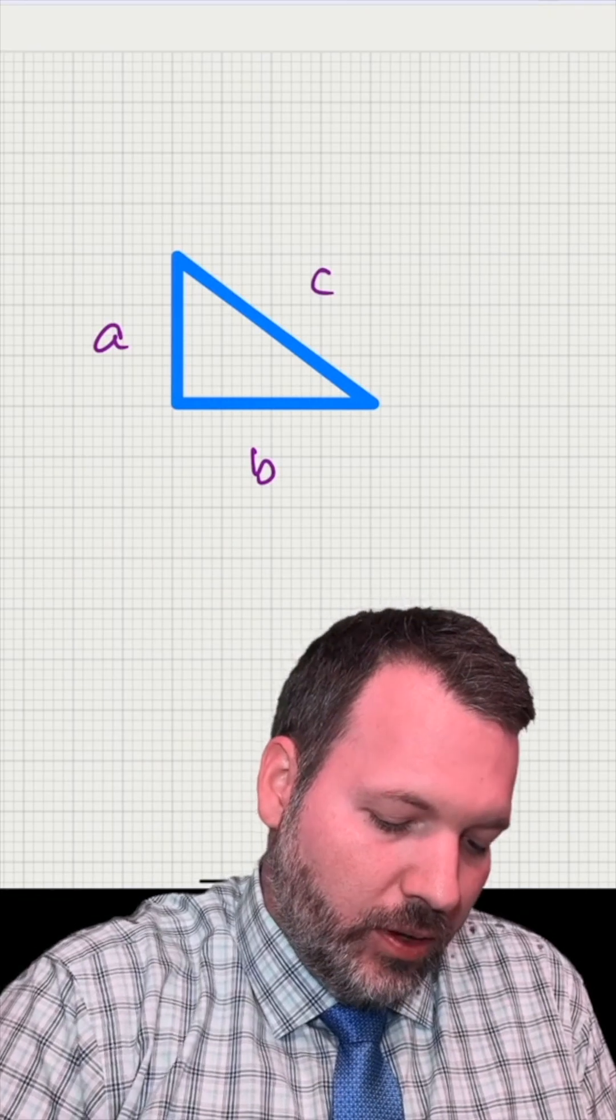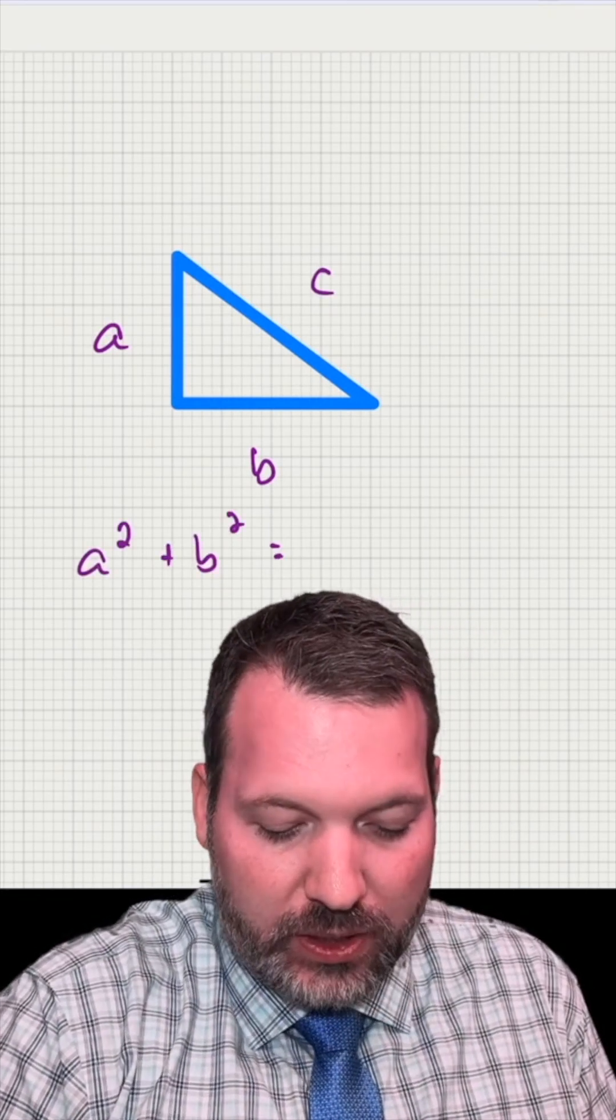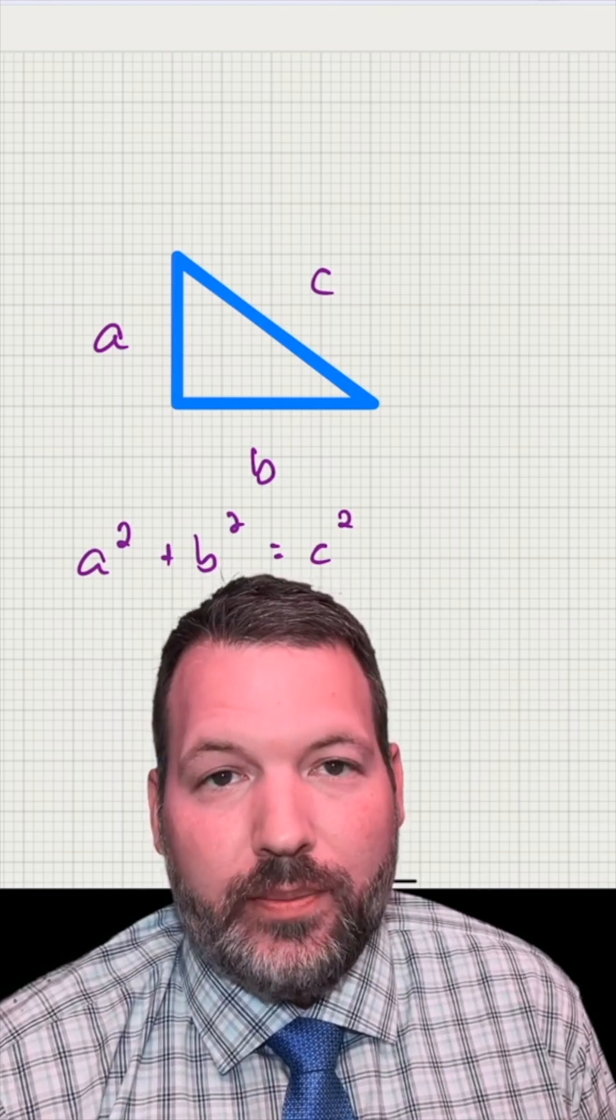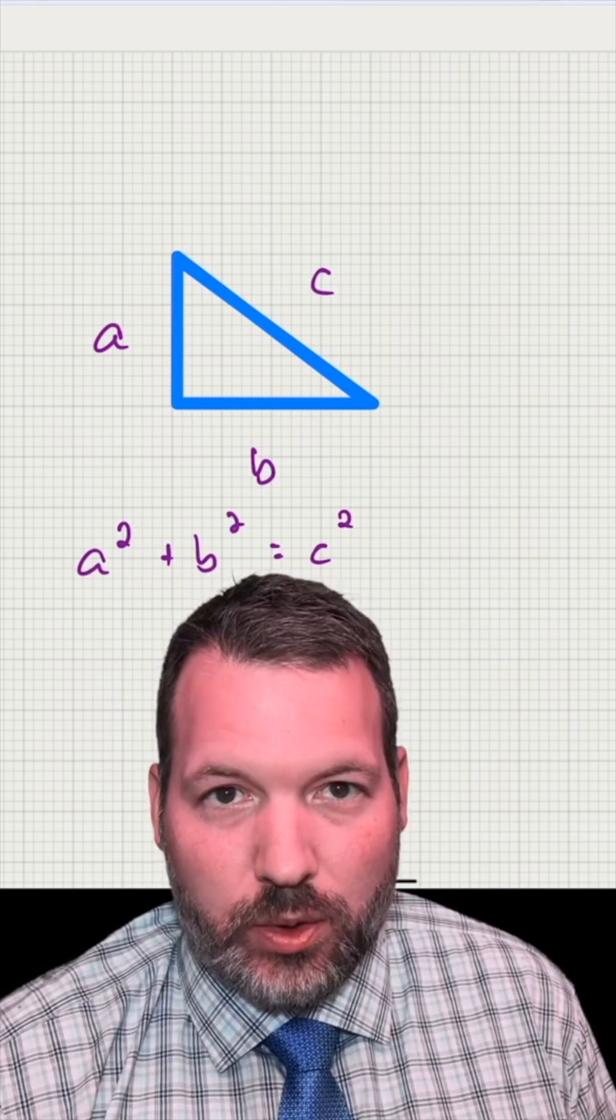That is, your teacher just kind of recites to you, if you take the legs of a right triangle, square them, and add those together, they add up to the square of the hypotenuse, or what we typically memorize as a squared plus b squared equals c squared.